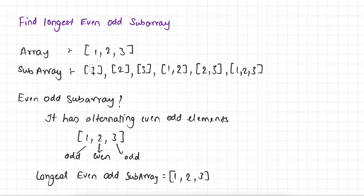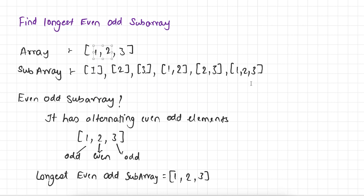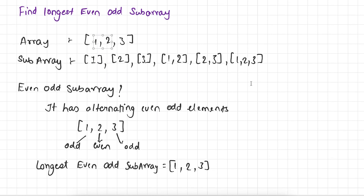So here 1 is itself a subarray, 2 is itself a subarray, 3 is itself a subarray. And 1-2 appears contiguously in the given array, that is why 1-2 is also a subarray. Similarly 2-3 and 1-2-3. So this is all about subarrays.